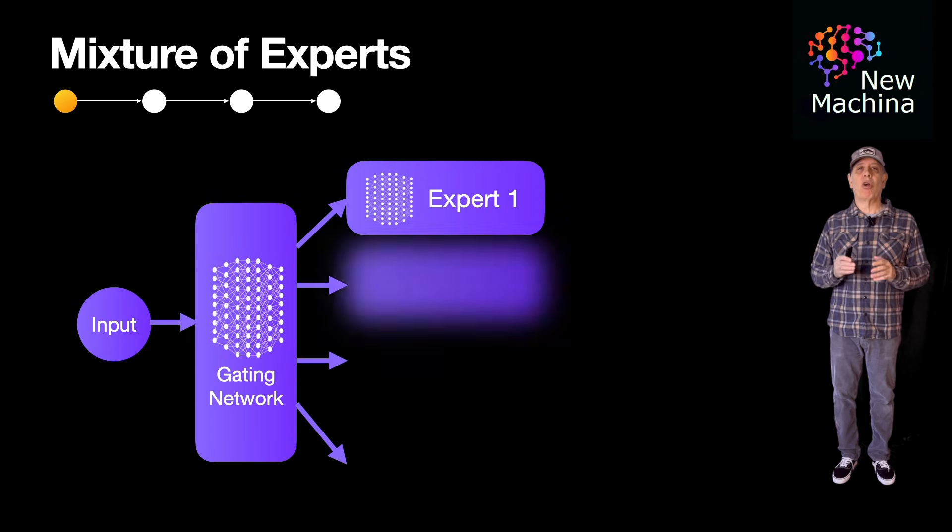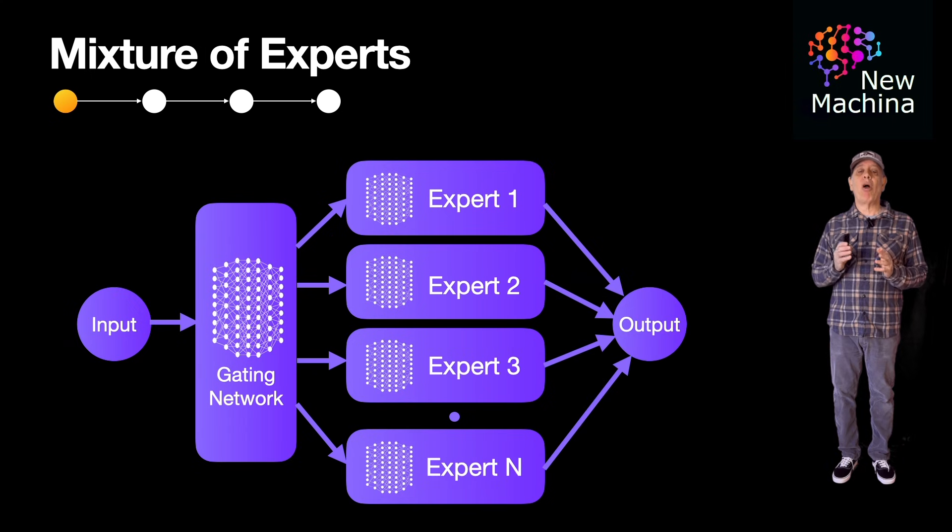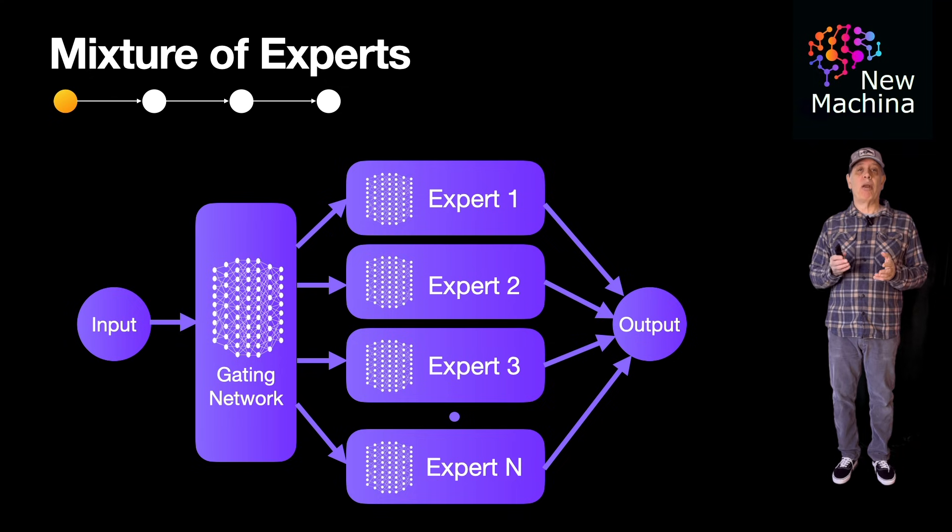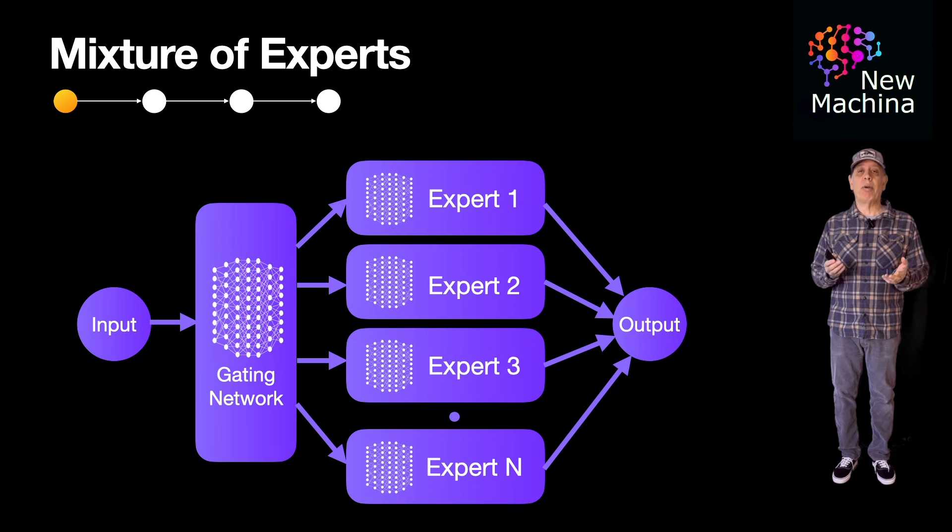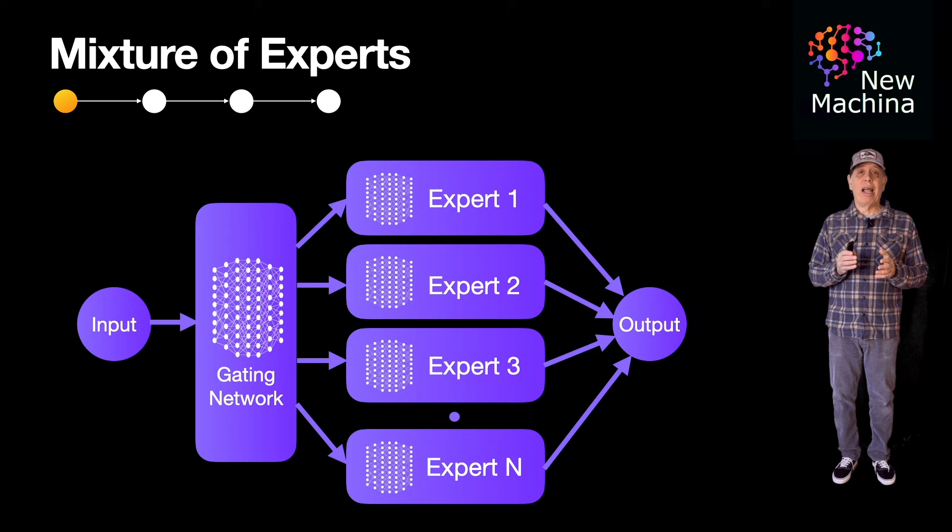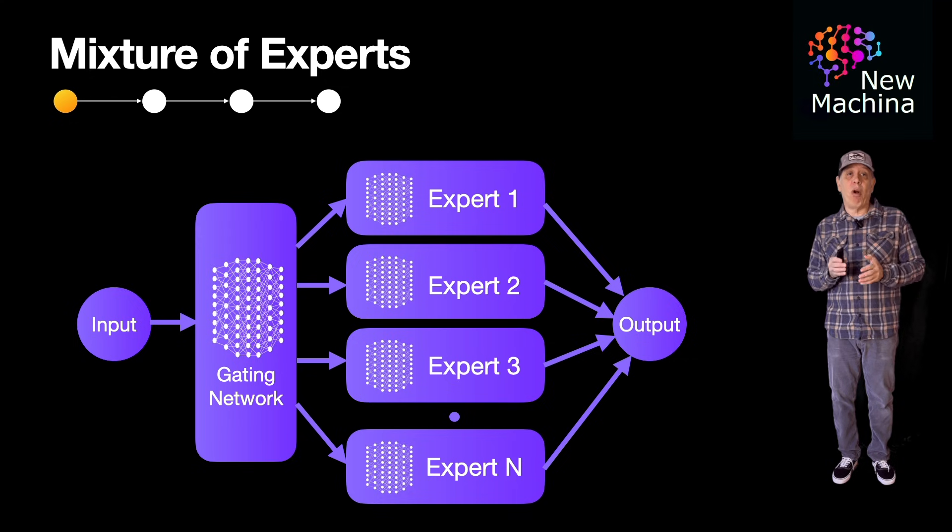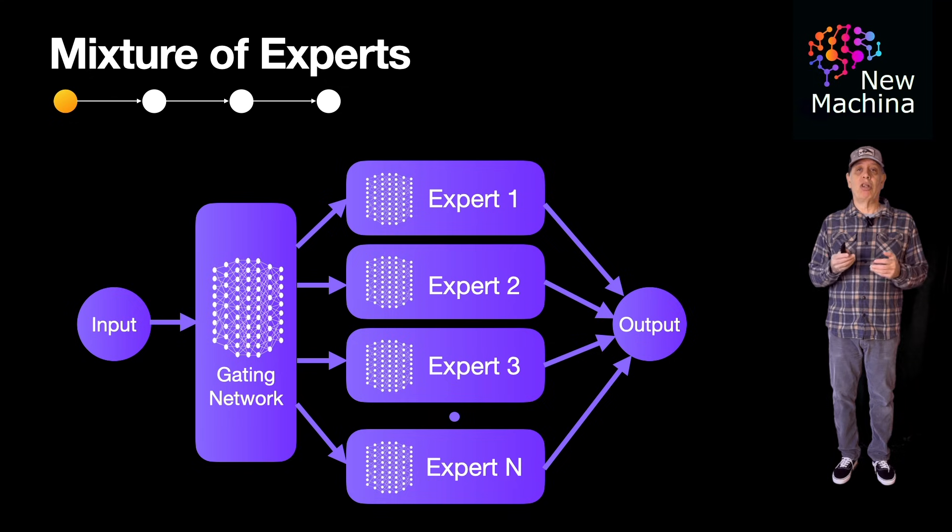So what is mixture of experts or MoE for short? Mixture of experts is a type of model architecture that leverages multiple specialized models, called experts, to handle different parts of the input data. Instead of having a single model process all input data, MoE uses a gating mechanism to dynamically select the most relevant experts or parts of the model for a given input, making it an efficient approach.